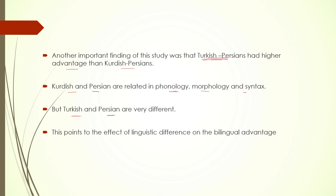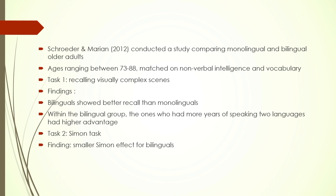Another study in 2012 compared bilingual and monolingual older adults aged between 73 and 88, matched on non-verbal intelligence and vocabulary. They had to recall visually complex scenes shown to them. Bilinguals showed better recall than monolinguals, and within the bilingual group, those with more years of speaking two languages had higher advantage. The study also had a Simon task inbuilt, and bilinguals showed a smaller Simon effect, confirming the executive control advantage even in this elderly population.